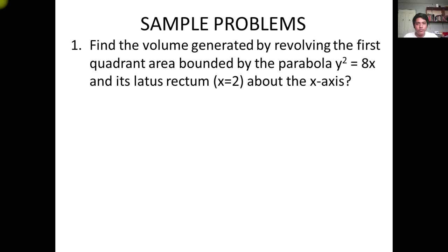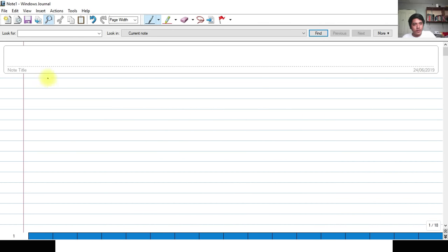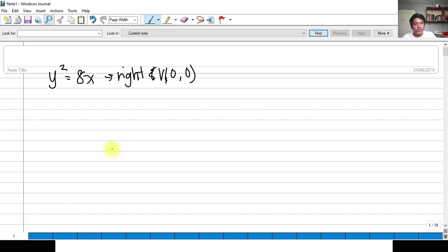For number one, we have to find the volume generated by revolving the first quadrant area bounded by the parabola Y² = 8x and its latus rectum, about the X-axis. We need to graph the curves first. We have a parabola Y² = 8x, which opens to the right with vertex at the origin (0, 0). Its latus rectum is at x = 2, so that is a vertical line through x = 2.